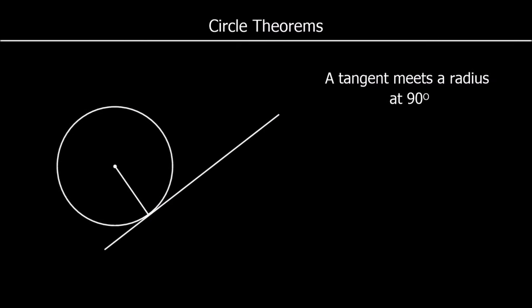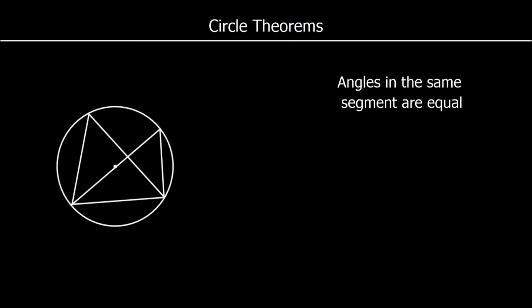A tangent meets a radius at 90 degrees. We have a tangent drawn here, and where the radius is drawn to meet the tangent — they touch at the same point — they are perpendicular, they make a 90 degree angle. So a tangent meets a radius at 90 degrees. If we drew the tangent somewhere else and drew a radius to meet it elsewhere on the circle, that would still be 90 degrees.